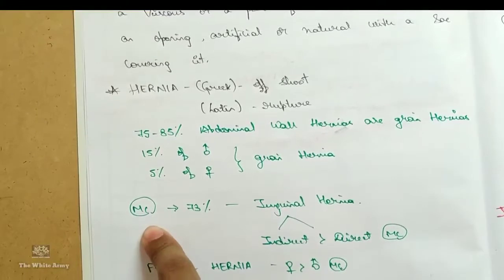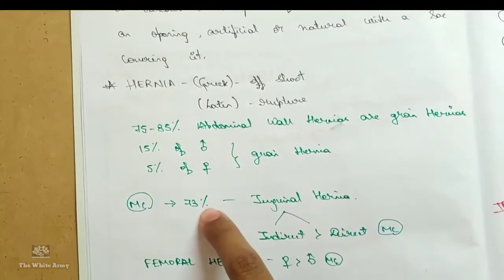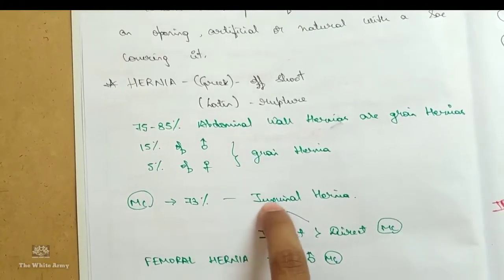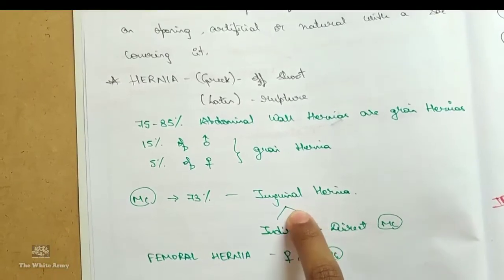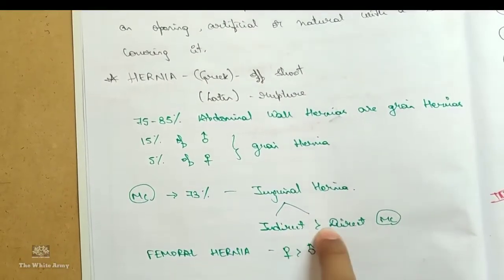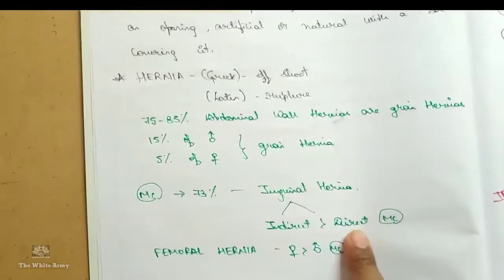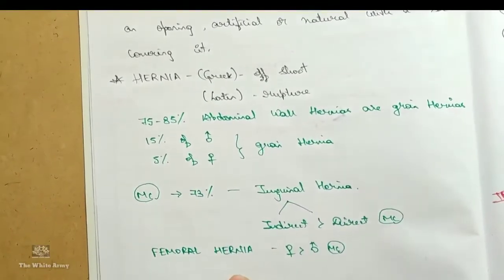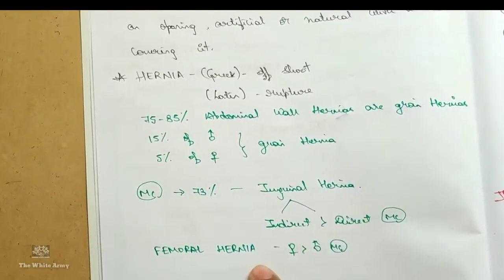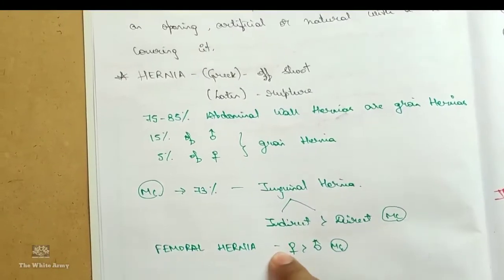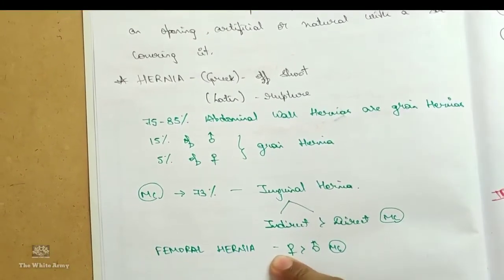Most common hernia, that is 73 percent of occurrence, is inguinal hernia and in inguinal hernia, indirect hernia is most common than direct hernia. And in female, femoral hernia is the most common hernia. This can be asked as an MCQ for PG entrance exams.